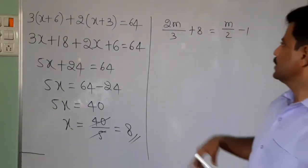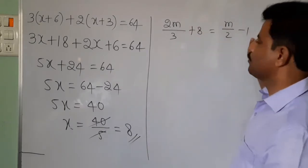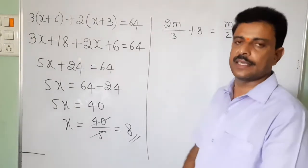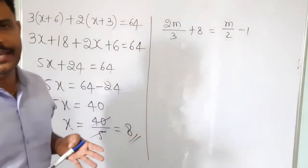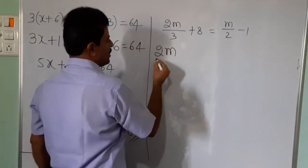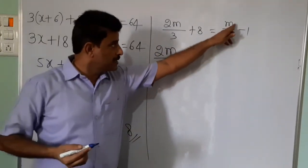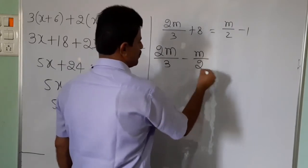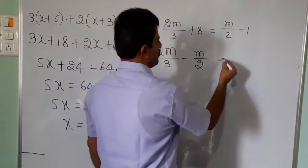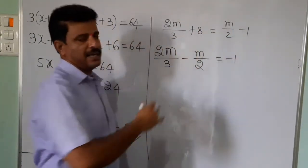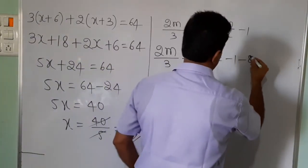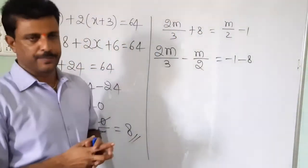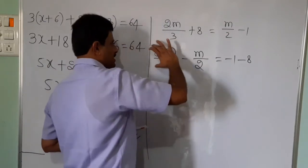Next problem: 2m by 3 plus 8 is equal to m by 2 minus 1. On the left-hand side there are two terms, on the right-hand side there are two terms. The variable is m. Group the variables on one side: bring m by 2 to the left — plus changes to minus — giving 2m by 3 minus m by 2. Then send 8 to the right side — plus changes to minus 8. So variables are grouped separately and constant terms are grouped separately.